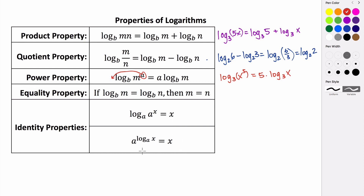Another identity property deals with an exponential expression. If you have an exponential where the base of your power is the same as the base of the log that is in the exponent, then it's just equal to the argument of that log. These properties are important when trying to evaluate logs, simplify log expressions, or solve logarithm equations.